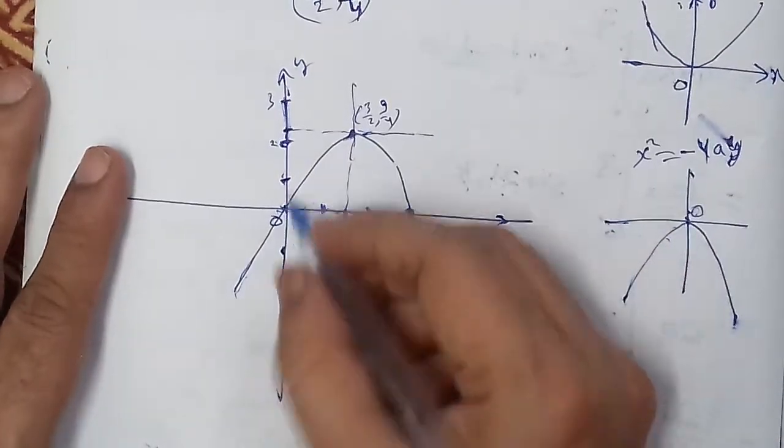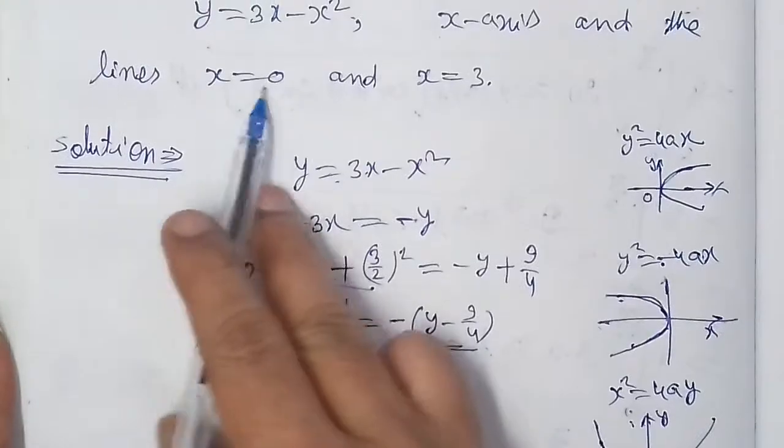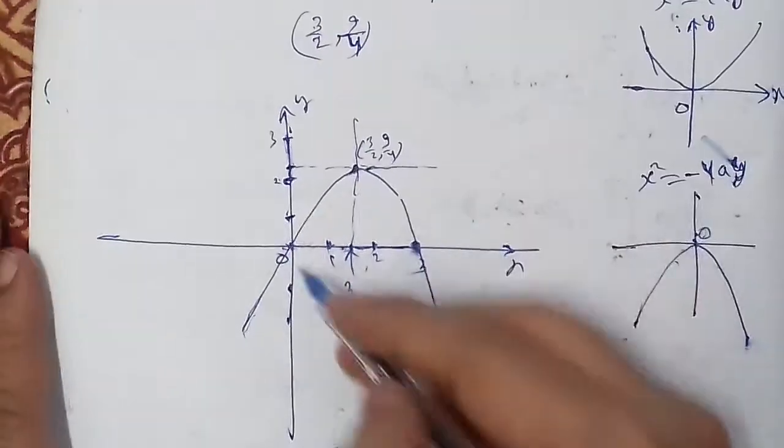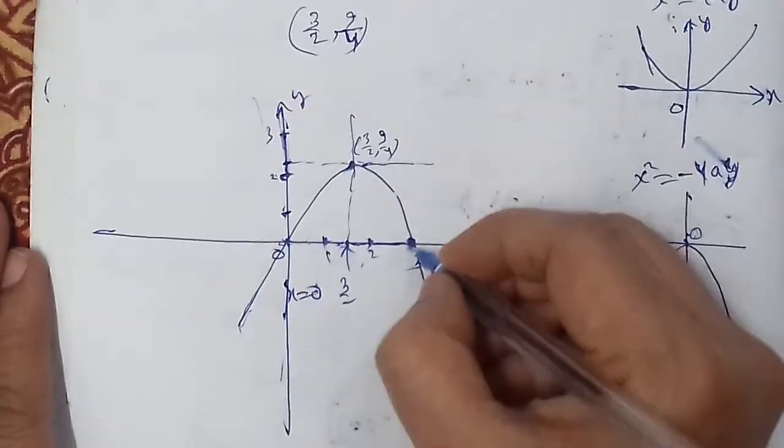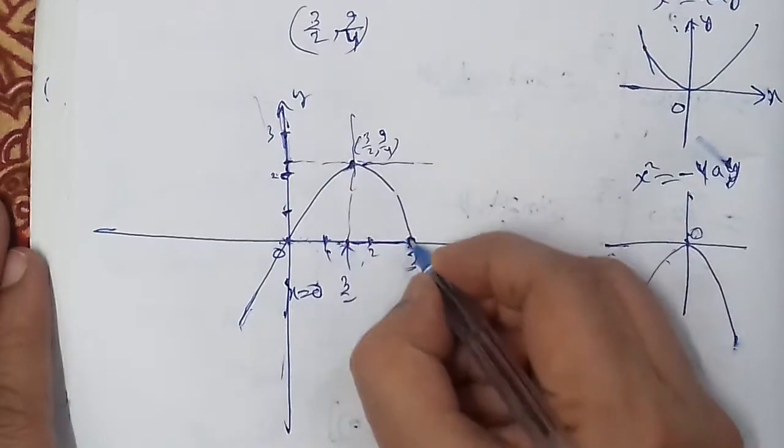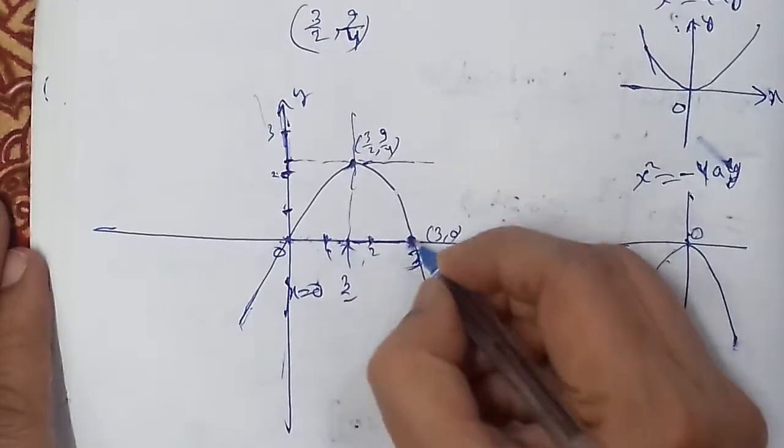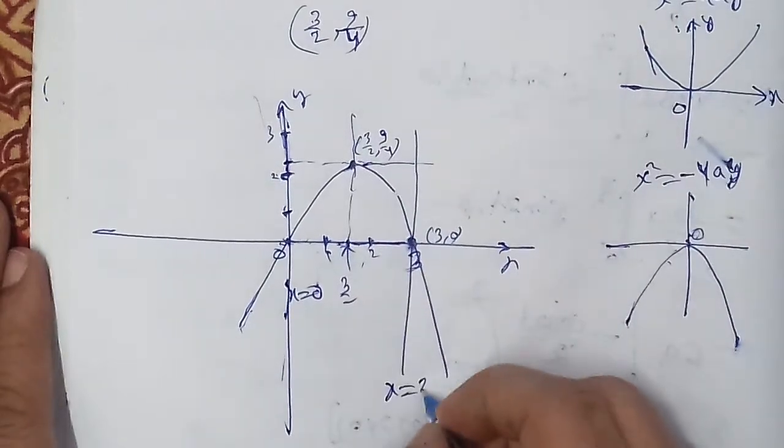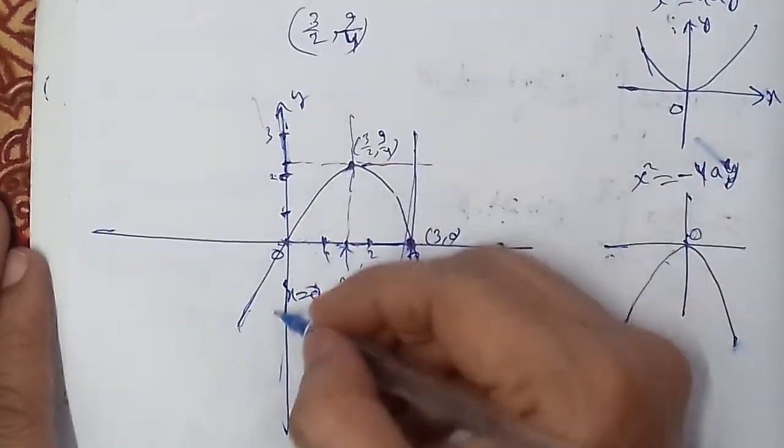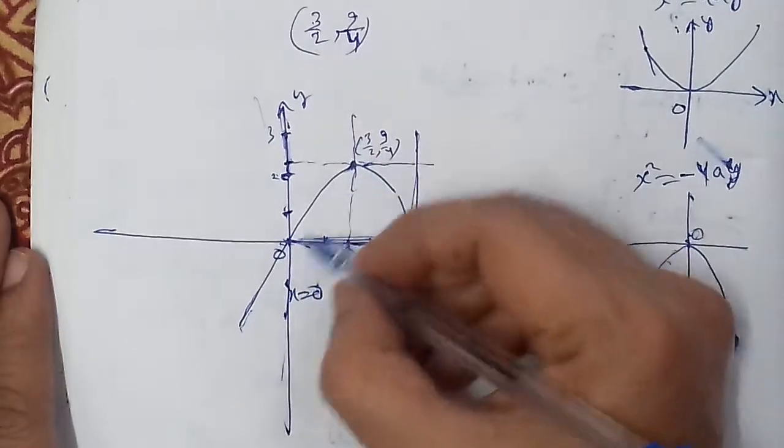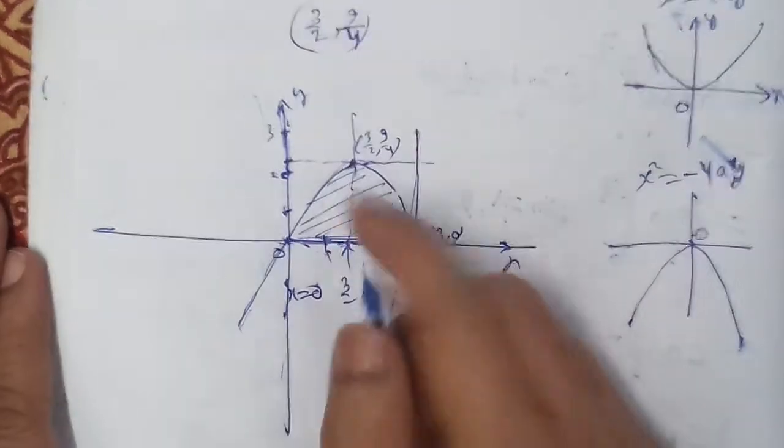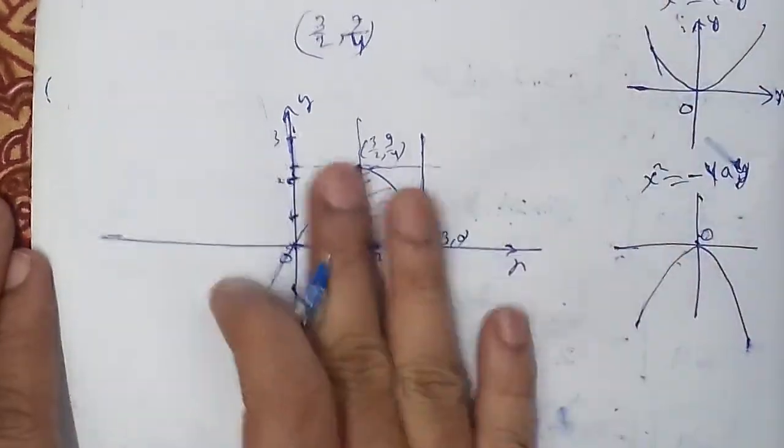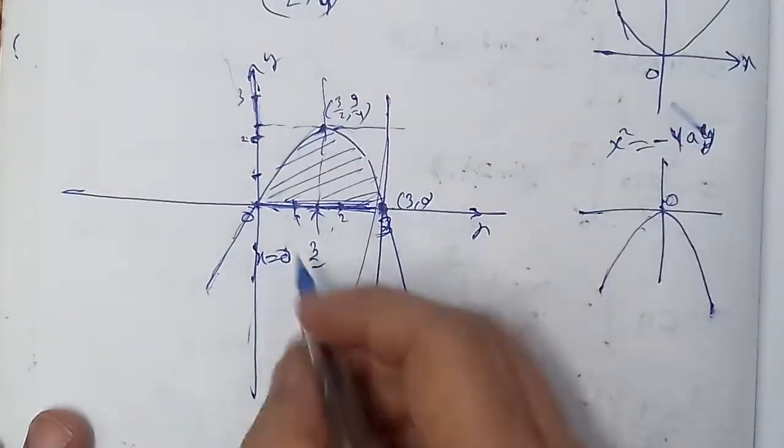This is the y-axis, this is the x-axis. x equals 0 is the y-axis, and x equals 3 is this vertical line at distance 3. The curve passes through these points, and we need to find the enclosed area between the curve, the x-axis, and these two vertical lines.